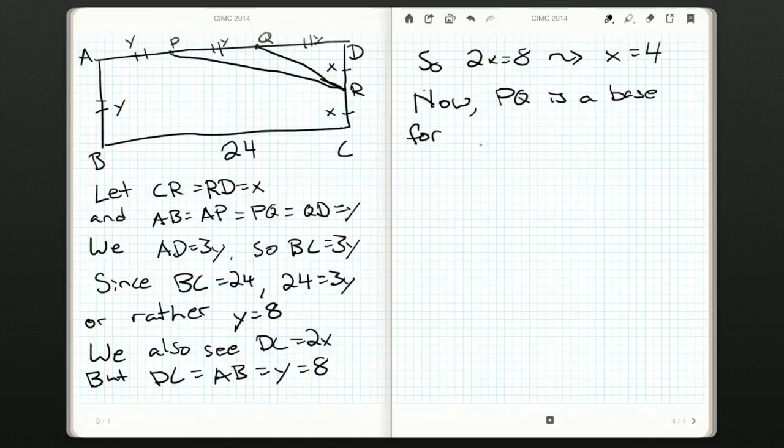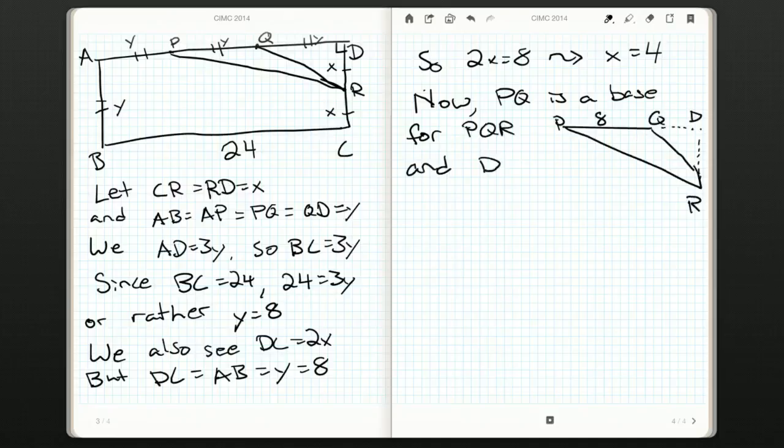So we want the area of PQR. We can realize that PQ is a base for PQR, a base of size 8. We want to know what the height of this triangle is. The height is just going to be DR, and we know that is 4.